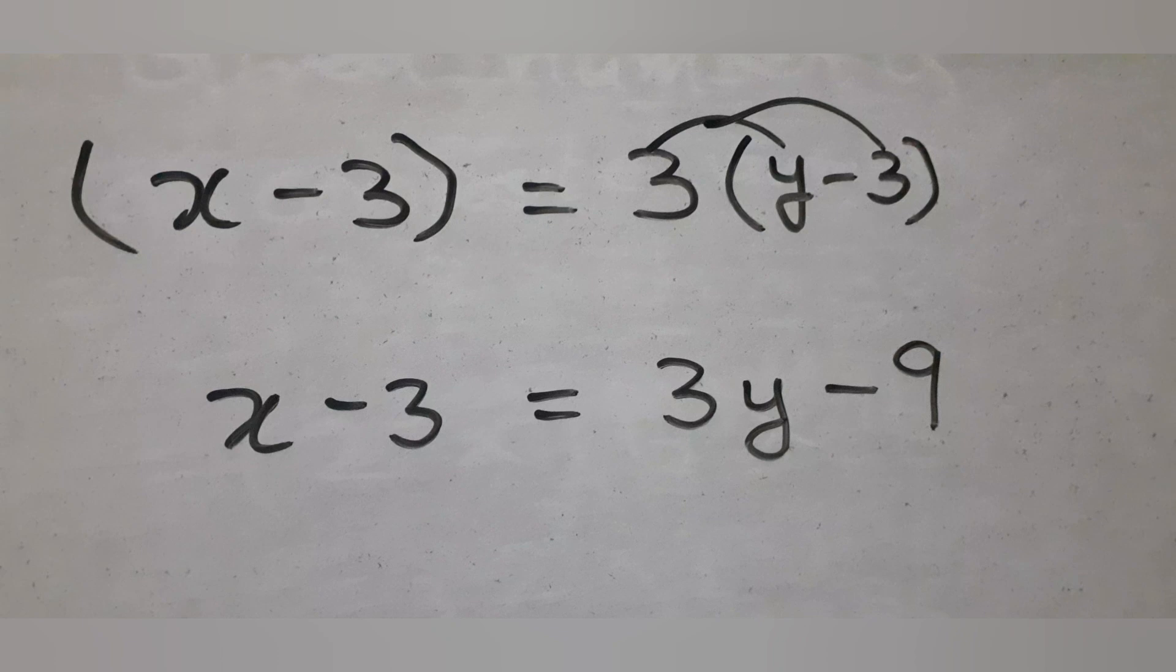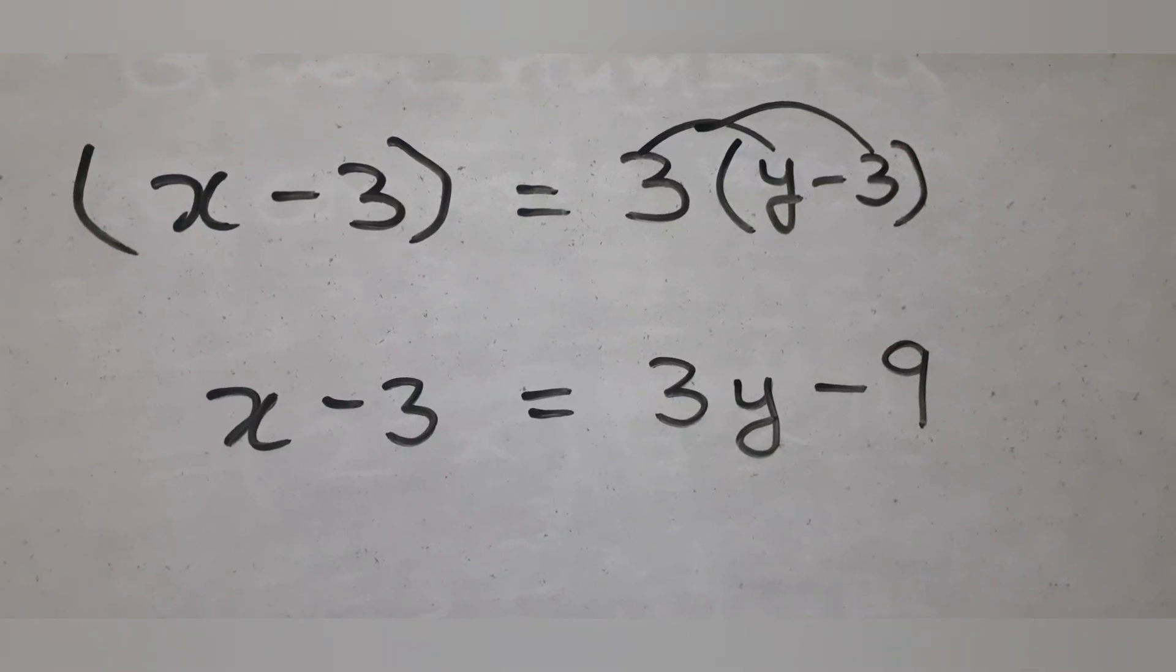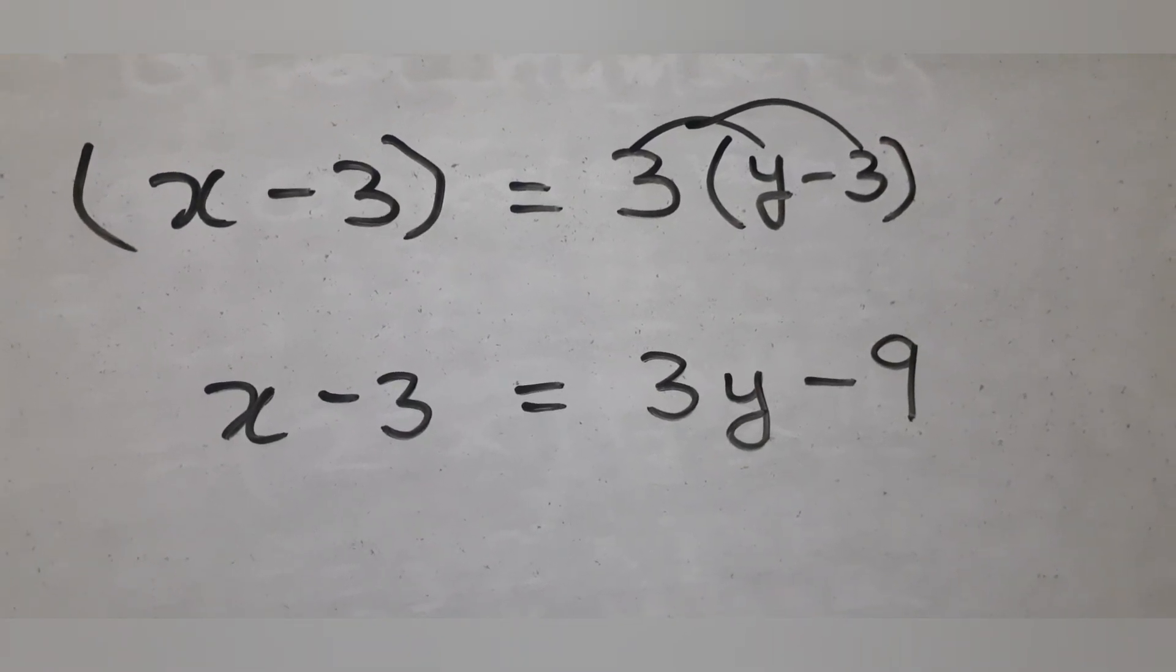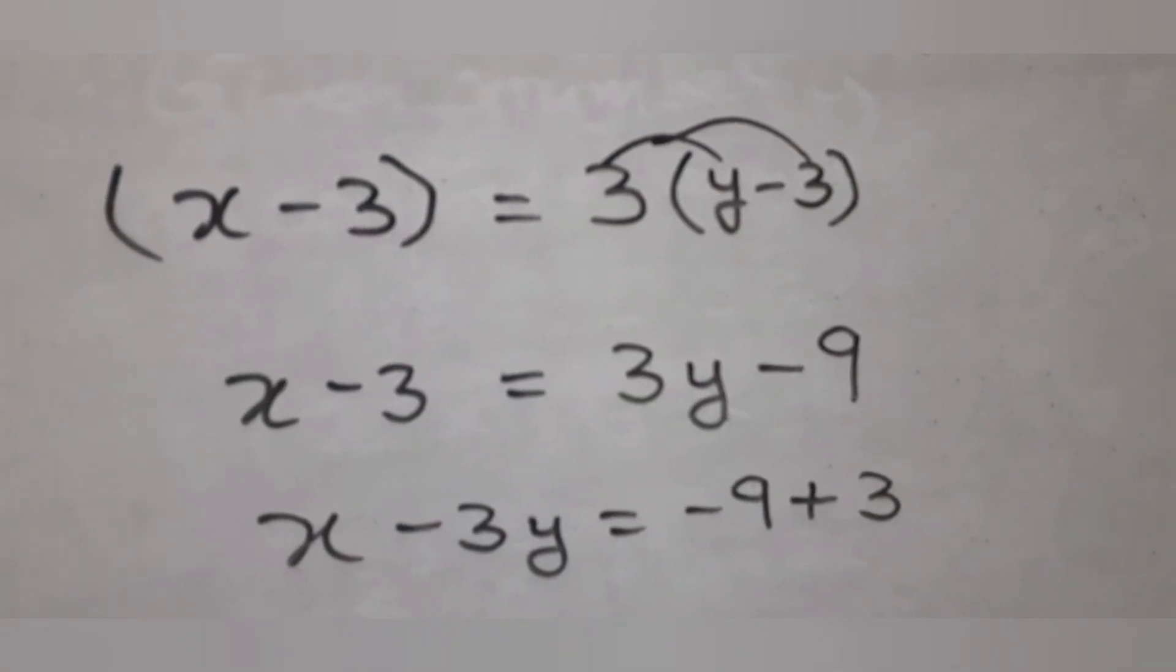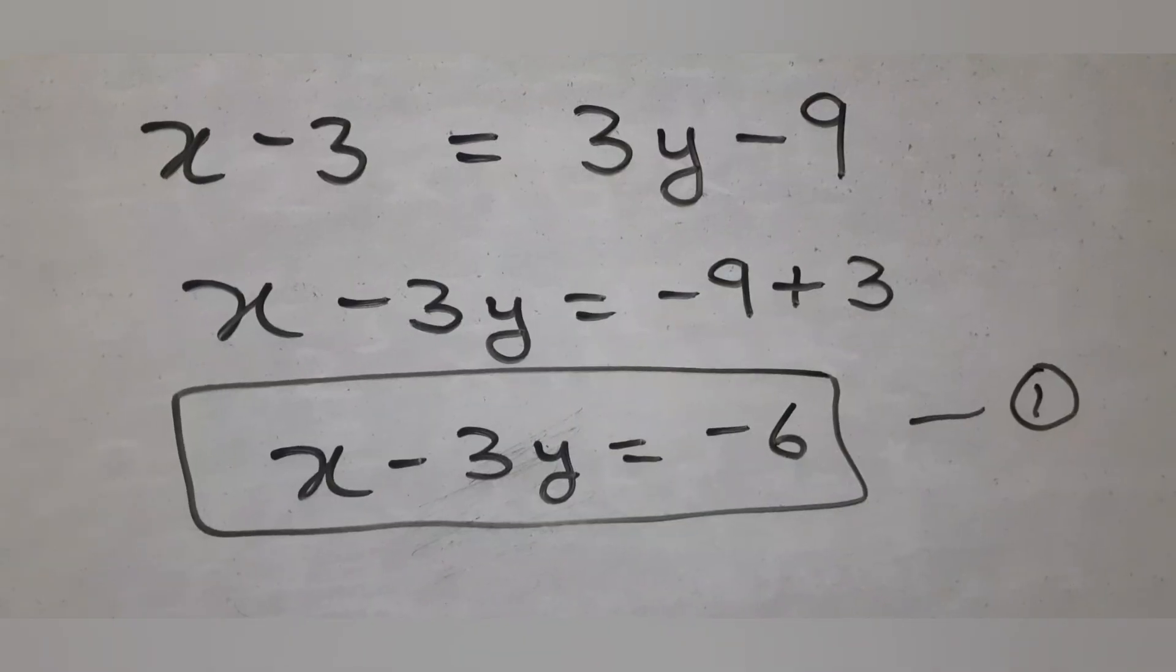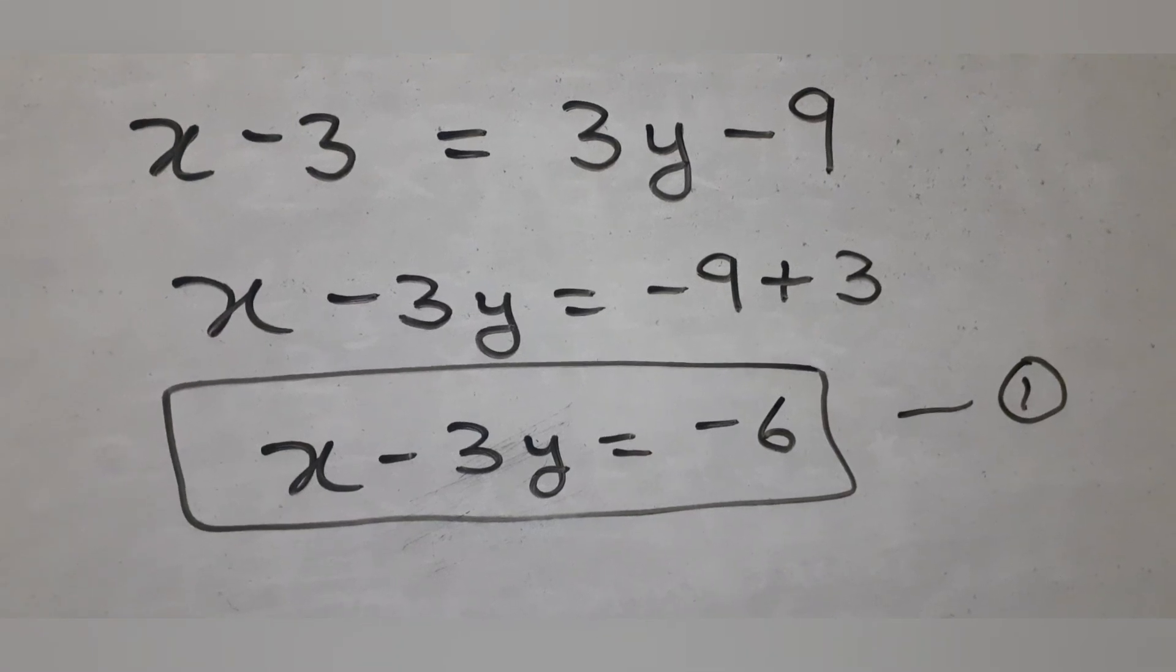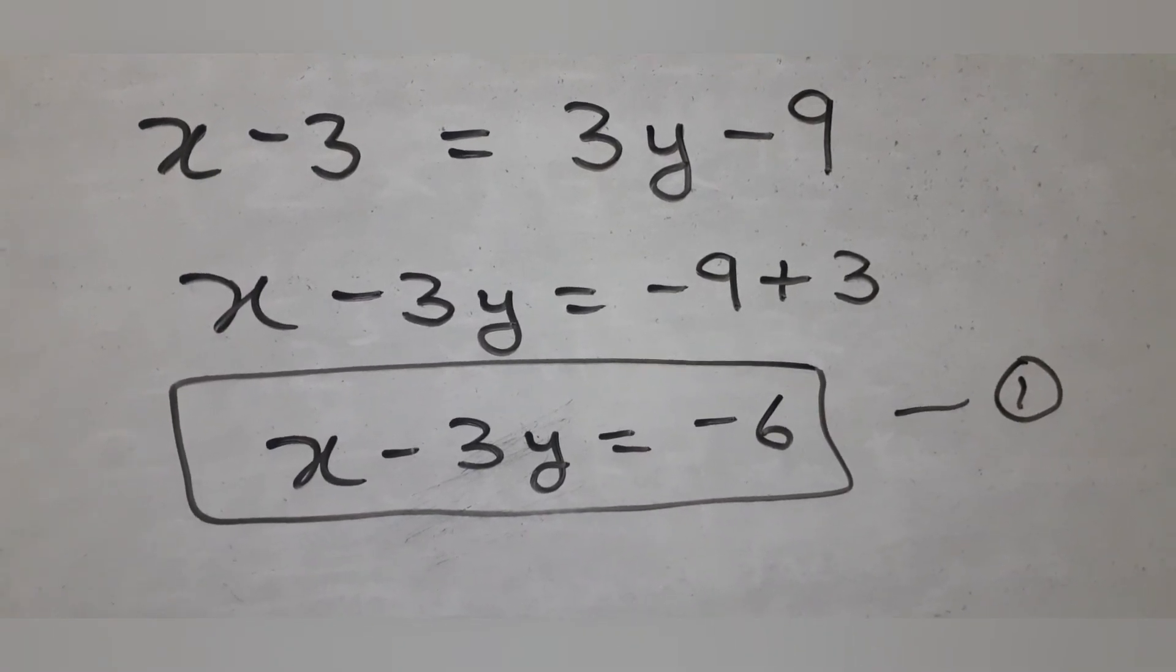Simplify the expression carefully. So we get the first equation: x minus 3y equal to minus 6.